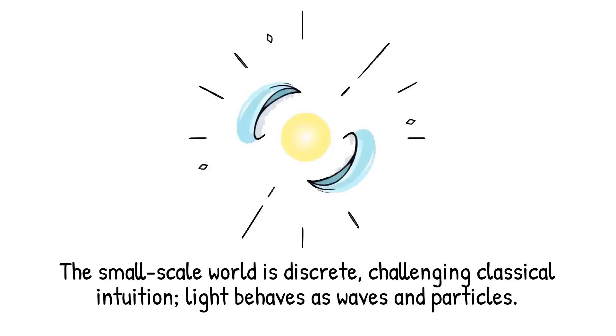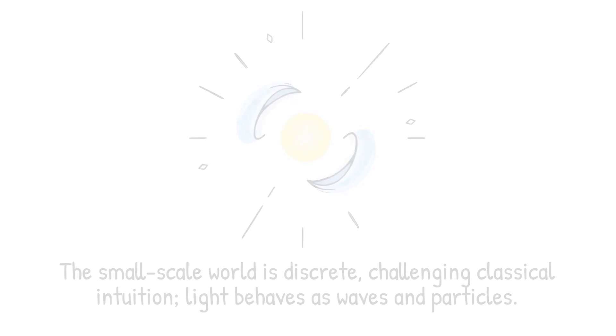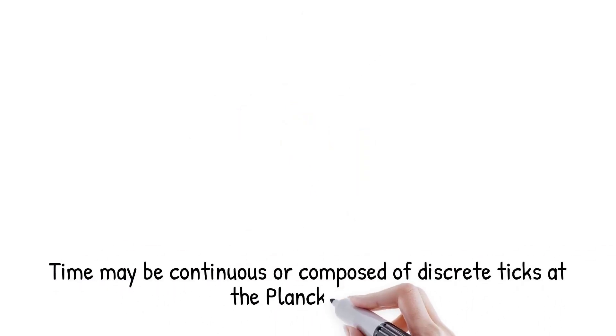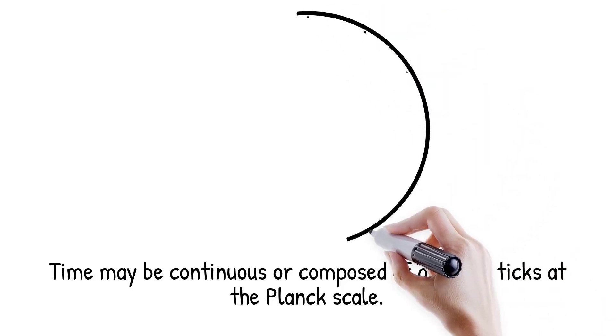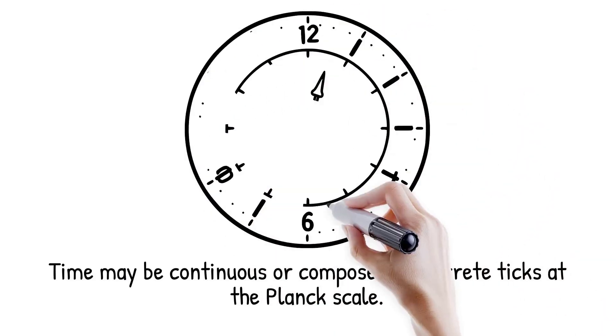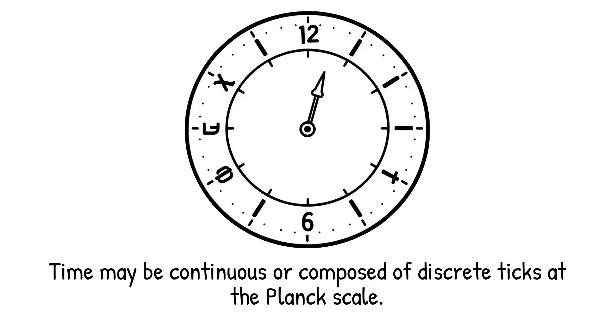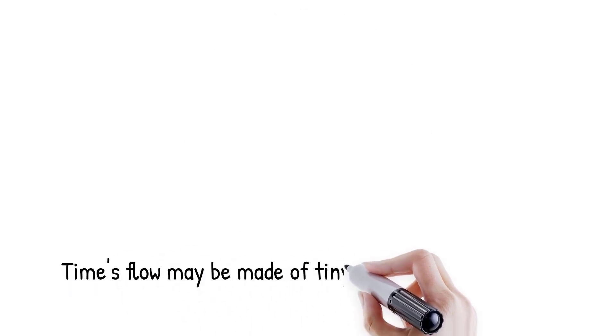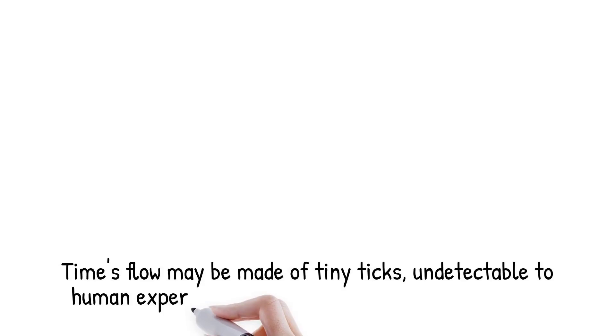Time itself may also be subject to the paradox of continuity and discreteness. Classical physics treats time as a smooth parameter, advancing continuously. Yet, some theories of quantum gravity suggest that time could be quantized at the Planck scale, 10 to the minus 43 seconds. If true, what feels like flow may be composed of unimaginably tiny ticks. Our human experience would never detect these because they are far below any direct measurement. Time could be both continuous in perception and discrete in reality.